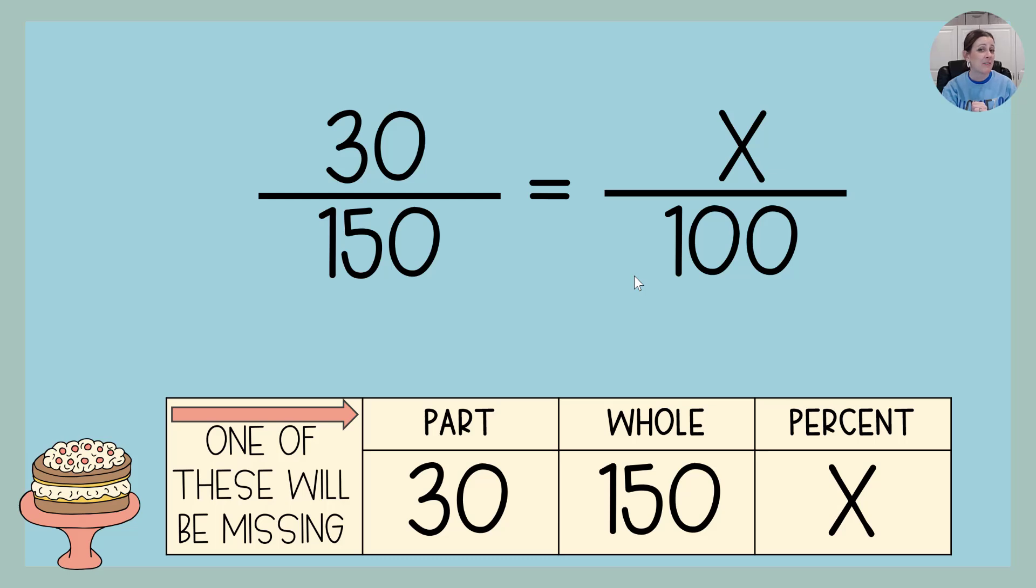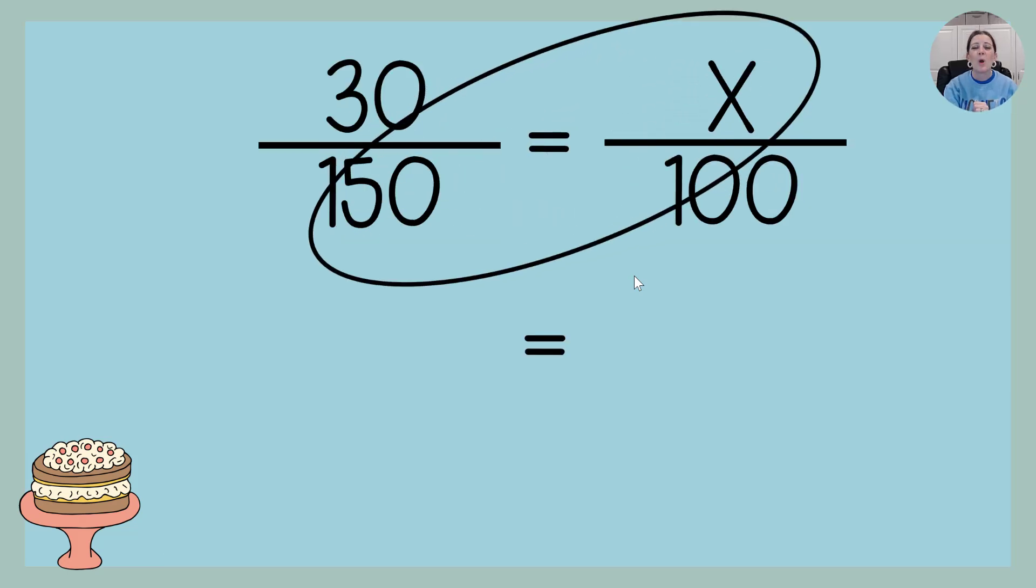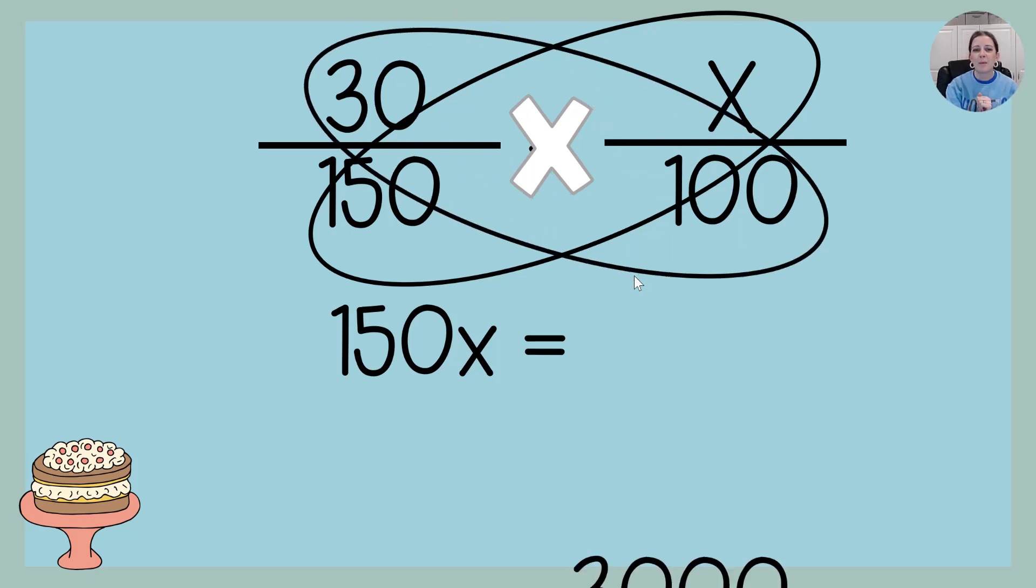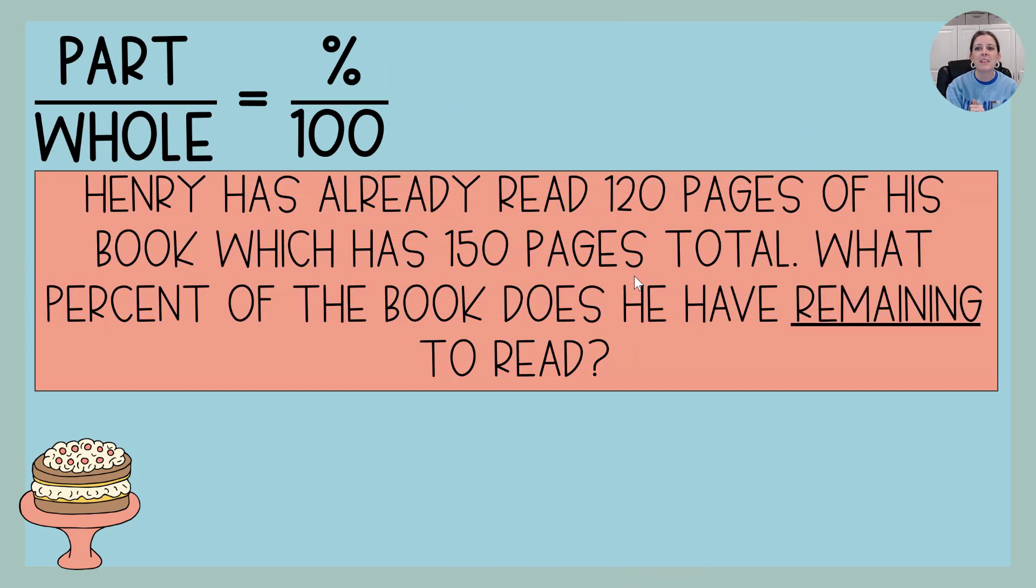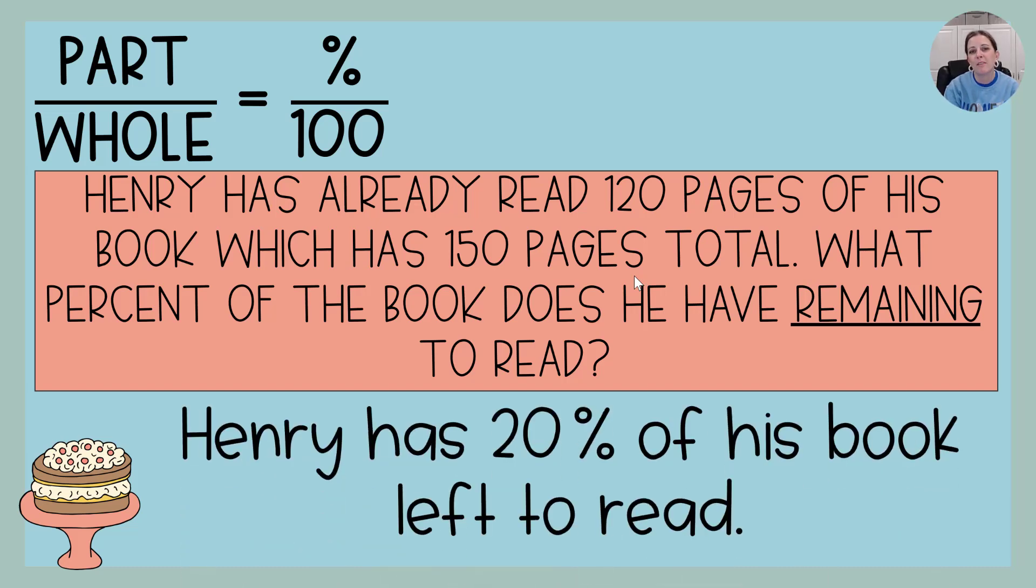And now we're ready for cross-multiplication again. 150 times X is 150X. 30 times 100 is 3,000. Dividing both sides by 150, X is 20. That means that Henry has 20% of his book left to read.